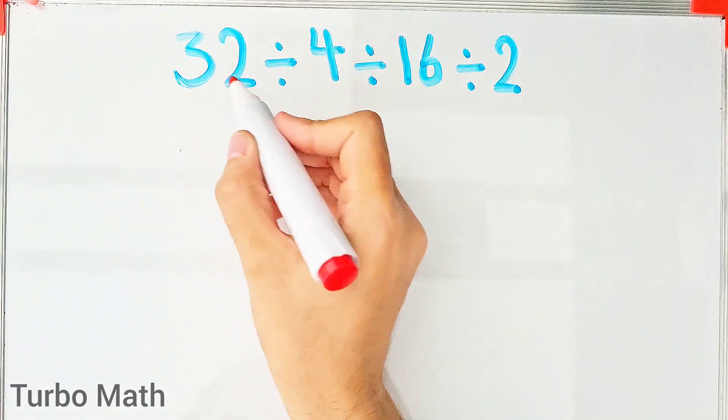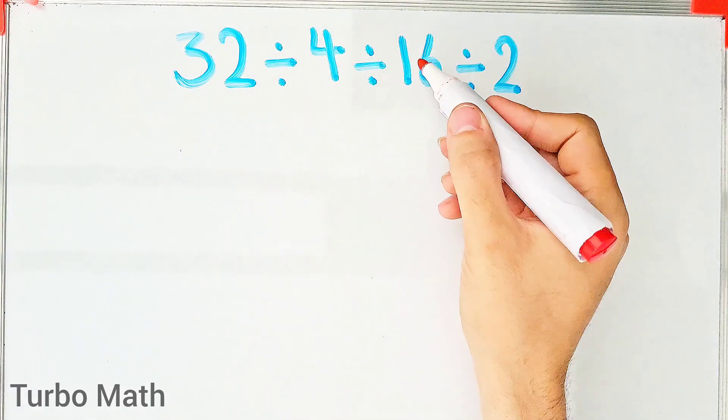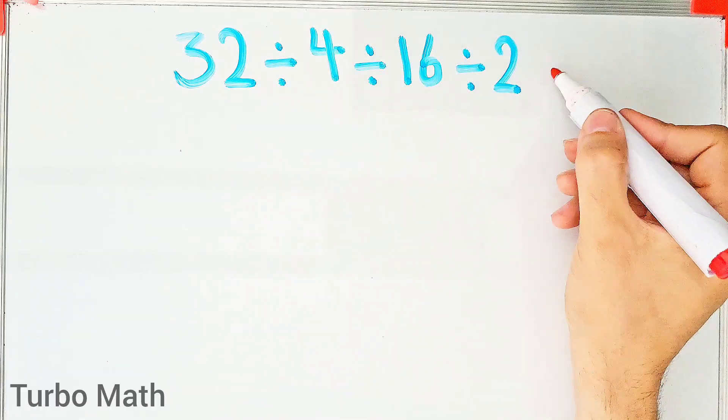32 divided by 4 then divided by 16 then divided by 2. What is the answer of this question? Can you solve it?